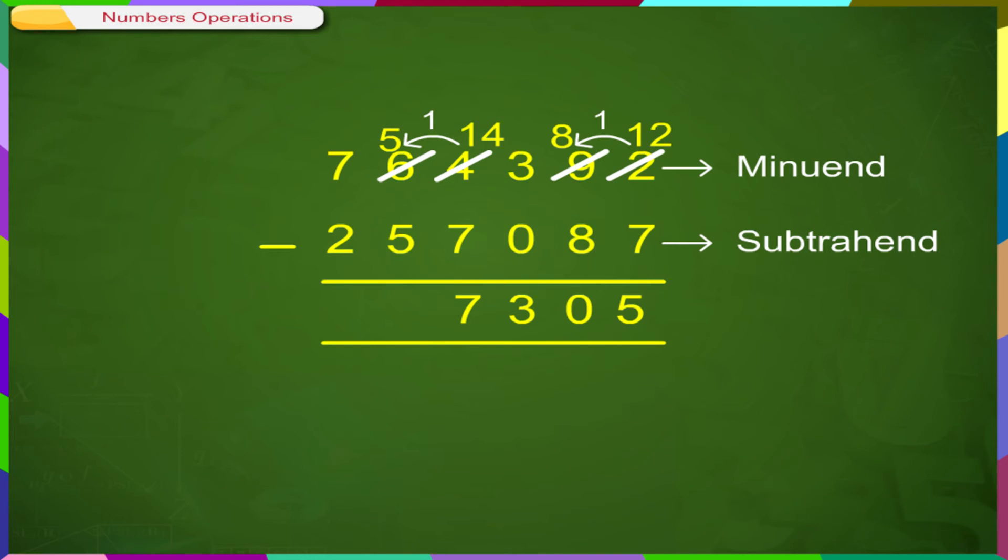Subtracting in the 10,000 column, 5 minus 5 is equal to 0. Finally, subtracting in the 100,000 column, 7 minus 2 is equal to 5. So, the difference is 507305.